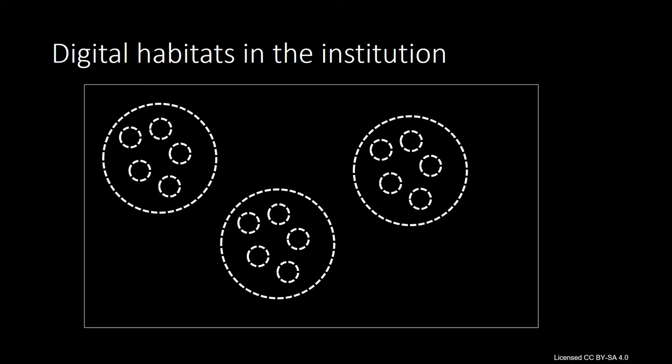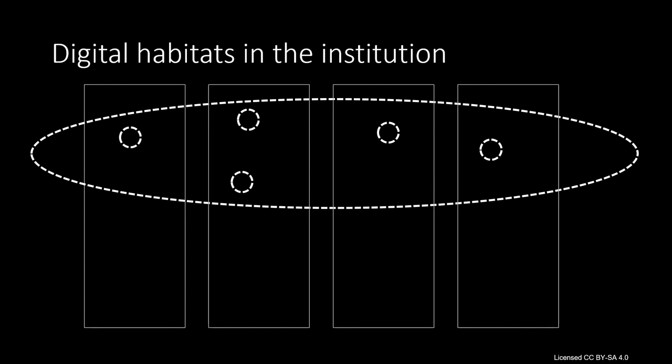Digital habitats as environments are based on ideas about communities of practice or communities of inquiry. As such they need to have a domain focus. This domain focus may come within an area of study, a discipline or a programme of study. They may be driven from within a single school or department or across several schools. For example, a school may have three digital habitats that focus on property, construction and project management. They may also be digital habitats where the domain is research-focused, such as creative practice research, where learners across several schools and programmes may form a community that way.